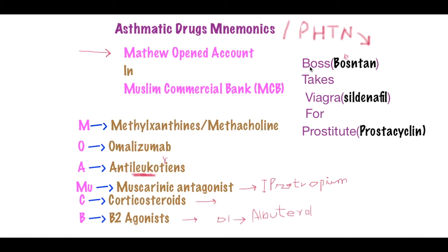Bosentan decreases vascular resistance. 'Viagra' stands for Sildenafil — we know what Viagra does, it dilates blood vessels so you can have better performance.